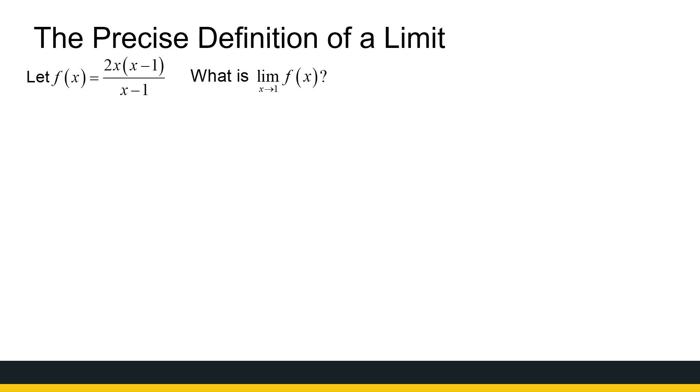We've got a function here. I factorize it 2x over x minus 1 over x minus 1. It's chosen very specifically. This function is defined everywhere except where x equals 1. We're going to look at the limit as x approaches 1.